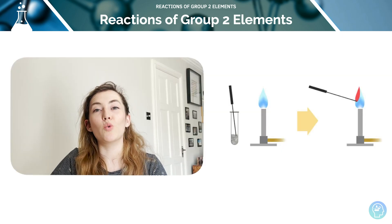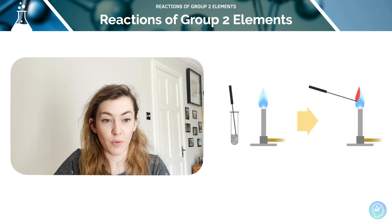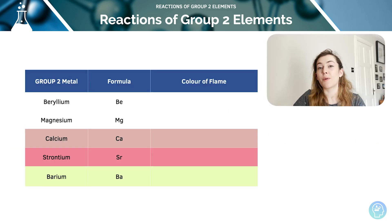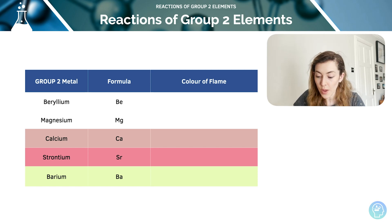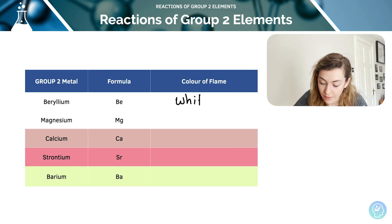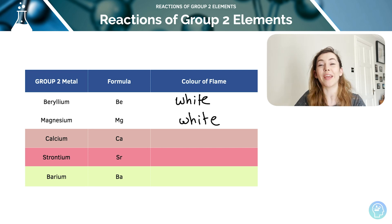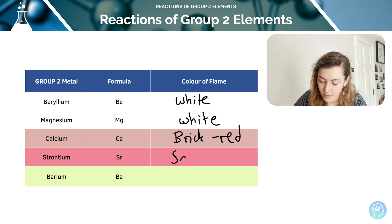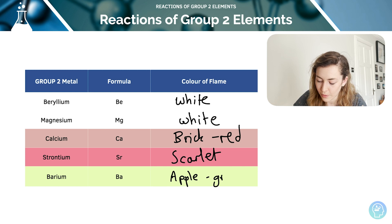Different group 2 metals burn with different coloured flames when reacting with oxygen, and this can be used to test for the presence of 2+ ions. Note this is on some specifications and not others, so double check. Beryllium and magnesium give a white flame — magnesium burns very brightly. Calcium gives brick red, strontium gives scarlet, and barium gives apple green.